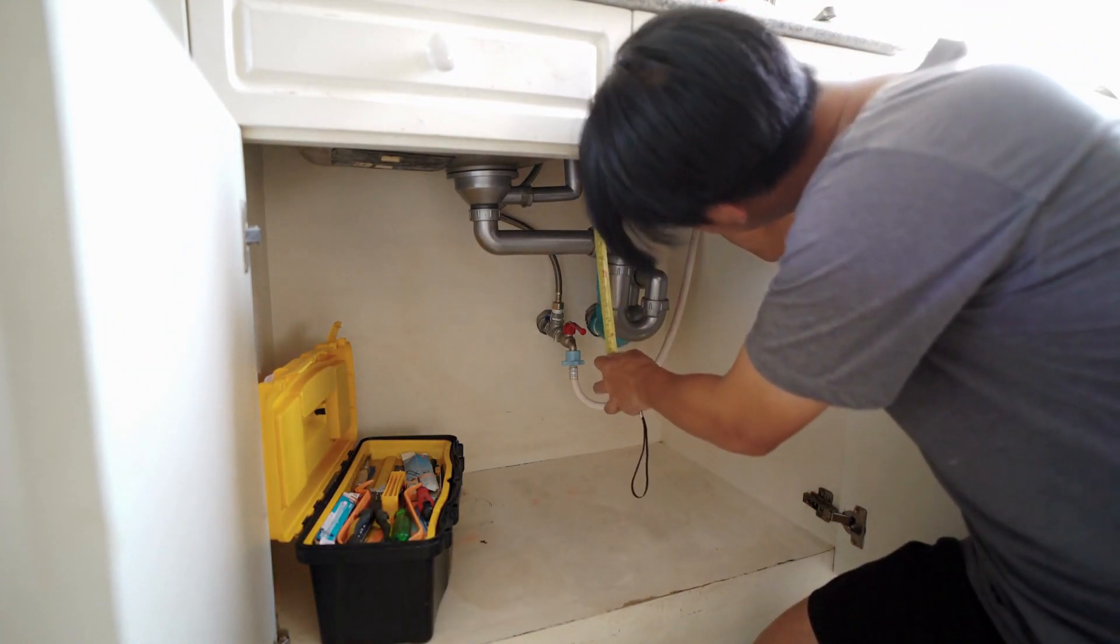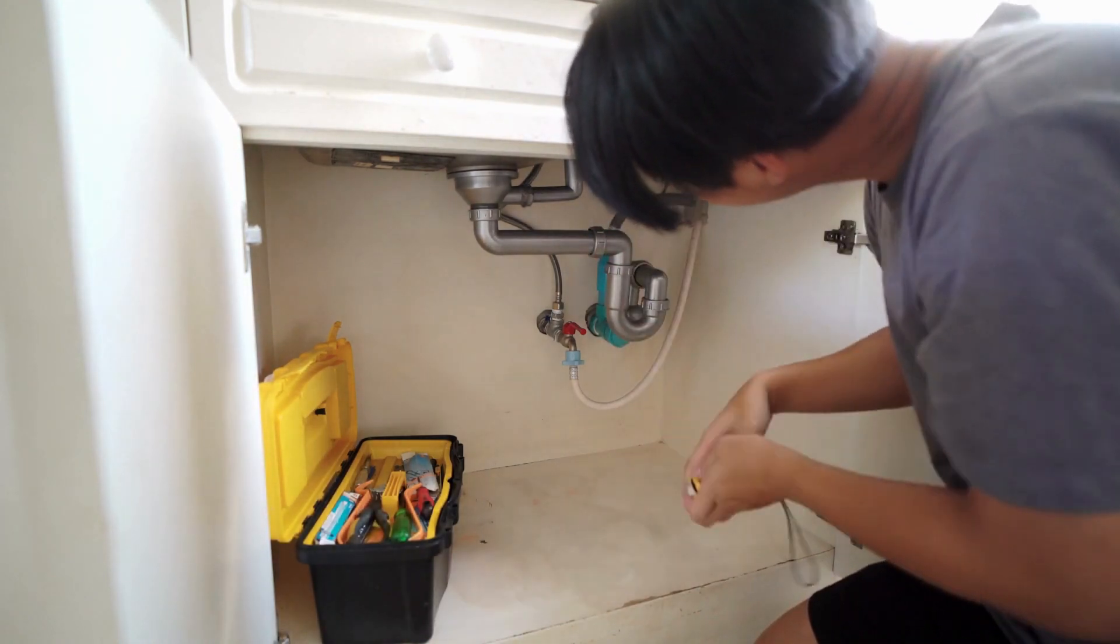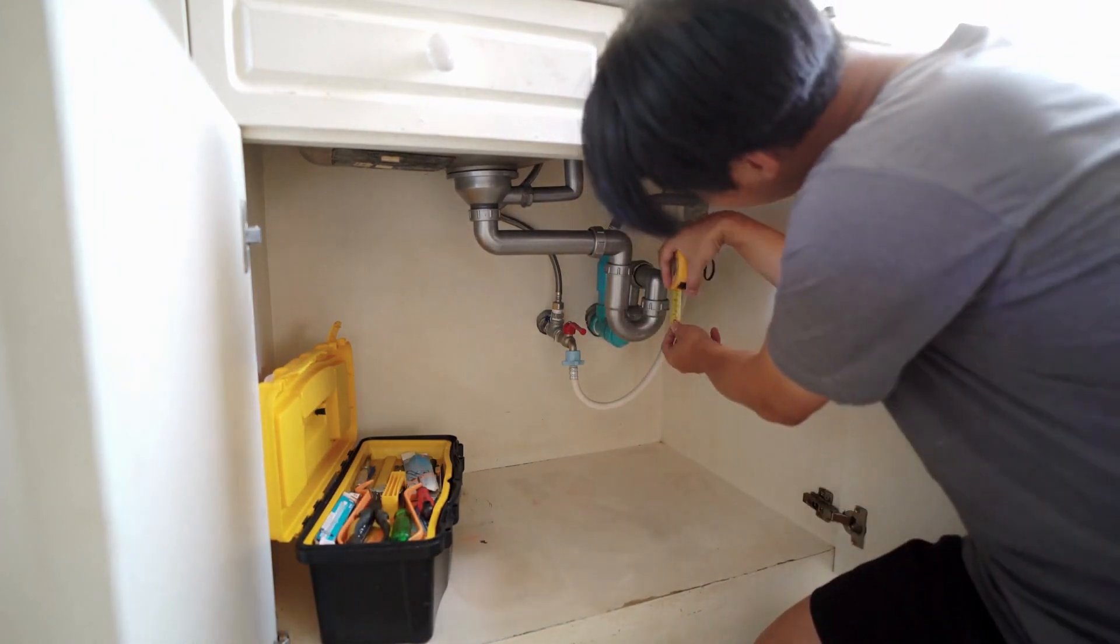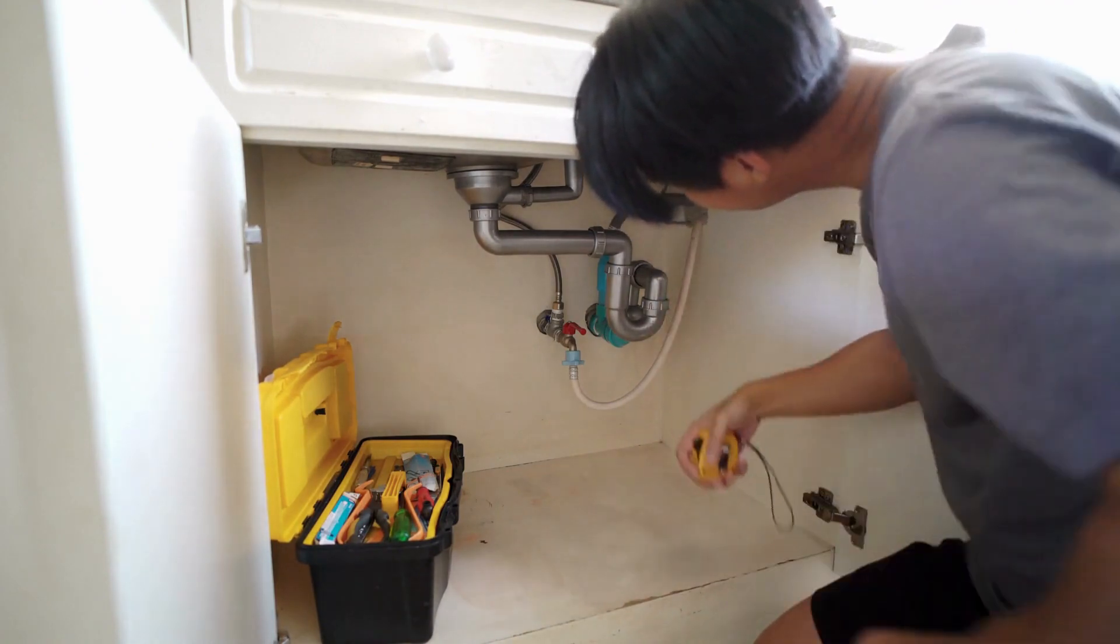For copper pipes, you can refer to a copper pipe size conversion chart. Similarly, PVC, stainless steel, and brass pipes have their own conversion charts as well.